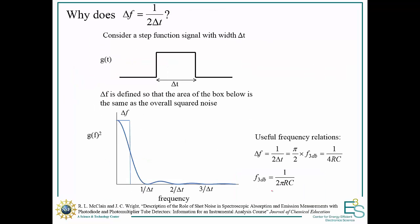Why did we use delta f equals 1 over 2 delta t? To understand that, consider a step function signal with a width of delta t. If you take the Fourier transform and look at that squared, we get essentially a sinc function. The way we define delta f is such that the area of this box is the same as the overall area under here.